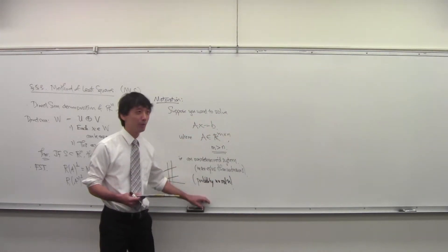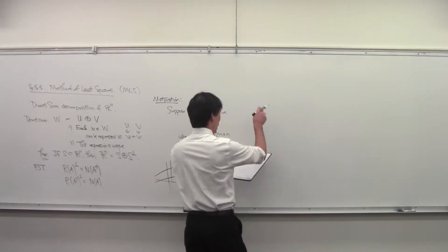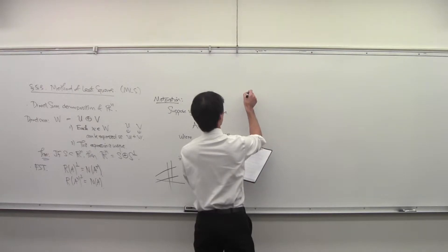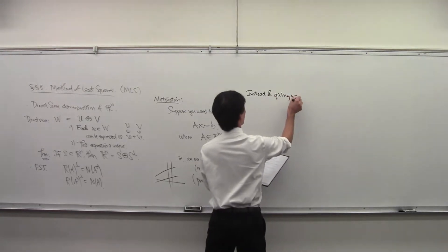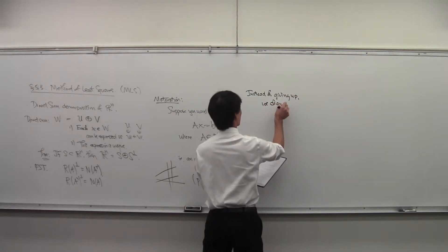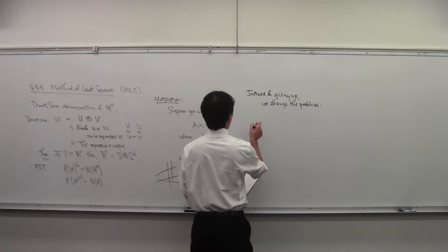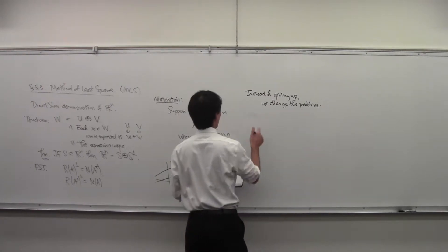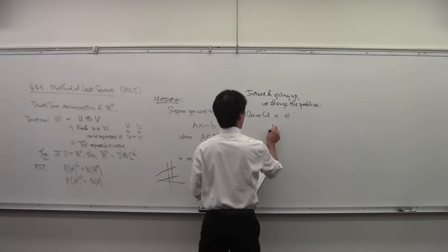You could give up — that's one approach. But instead of giving up, we change the problem. Instead, we ask: can we find X such that AX minus B is minimal? Our original problem was to find X such that AX minus B is zero, which would be great but probably won't happen. So instead we ask: can we minimize the error?